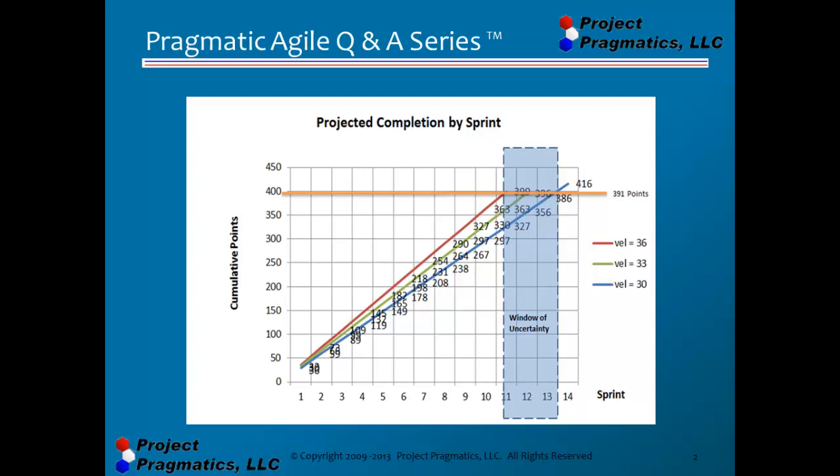All you have to do is plot out that line — 33 points per sprint — until you reach the maximum of 391 points. And that shows you that this project is projected to be done at sprint 12.